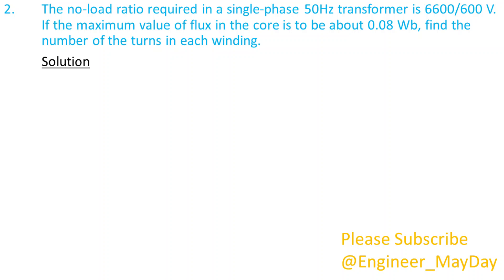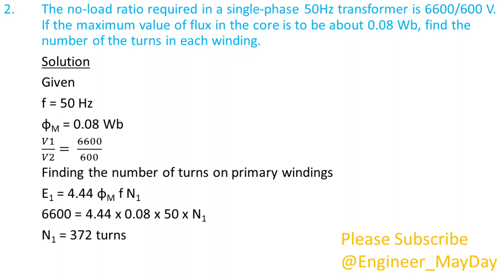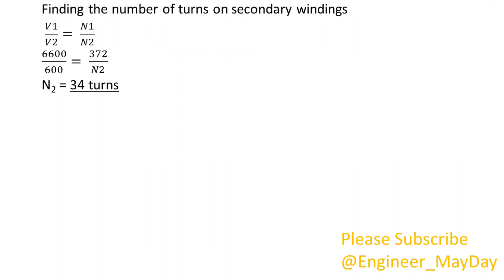Solution. Given: F equals 50 hertz. Maximum value of flux equals 0.08 weber. V1 over V2 equals 6,600 over 600. Finding the number of turns on primary winding: N1 equals 372 turns. Finding the number of turns on secondary winding: N2 equals 34 turns.